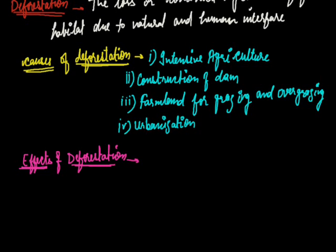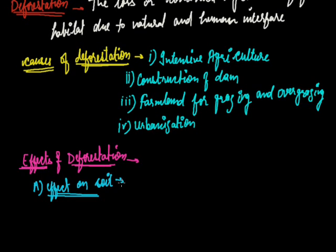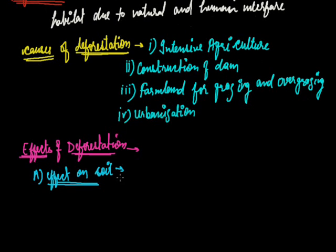The first effect of deforestation is its effect on soil. Roots of trees help in binding soil particles together. When this protective cover of vegetation is destroyed, soil is left loose and more soil is lost due to erosion by wind and moving water. Loss of soil rich in humus results in a reduction in the fertility of soil. So due to deforestation, soil erosion occurs.